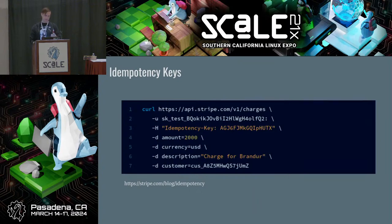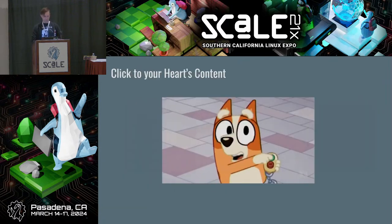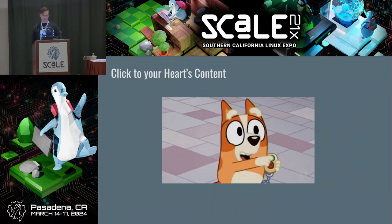Here's an example from Stripe. Given an idempotency key, you can make this request a thousand times and it will never yield anything but the initial result. You might not have gotten that initial result, but the idea is safe retry. Assuming you've got your idempotency keys correct, you can click to your heart's content.